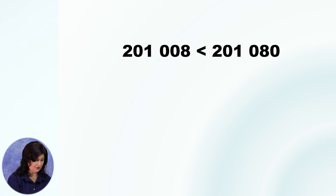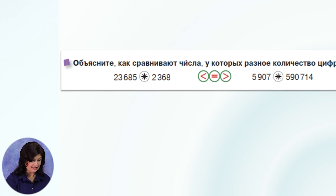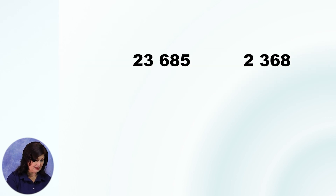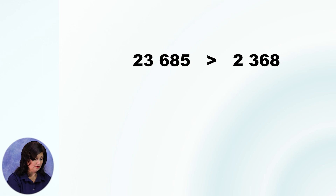Объясните, как сравнивают числа, у которых разное количество цифр. Посмотрите в учебник на задании ниже. Так как числа большие, многозначные, начнём с того, что разобьём эти числа на классы, отделив справа три цифры класса единиц — так удобнее определять равное или нет у них количество цифр. Теперь мы прекрасно видим, что первое число пятизначное, а второе четырёхзначное. Значит, 23 685 больше, чем 2368. Мы сравниваем по количеству разрядов — больше то число, в котором больше разрядов.